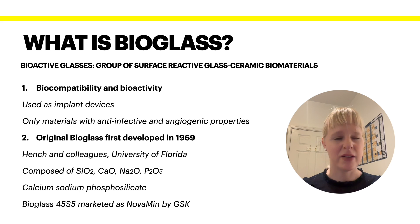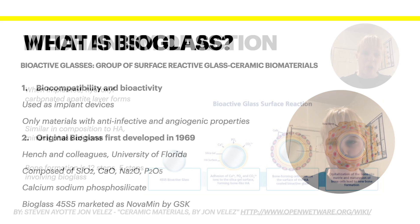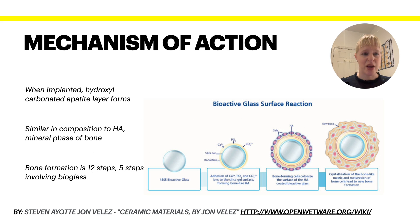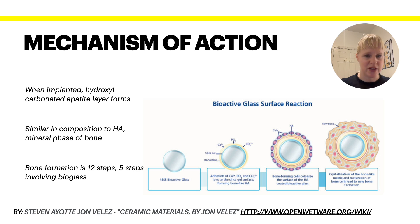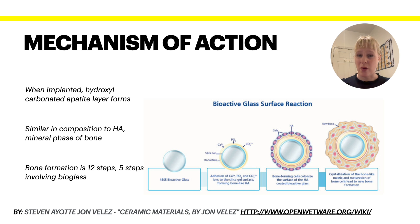What is the mechanism behind this action and how do these bioglasses actually work? Once the bioactive glass is implanted, a hydroxycarbonated apatite (HCA) layer forms around it. You get adhesion of calcium and phosphate ions to the silica gel surface, forming a layer very similar in composition to hydroxyapatite — the mineral phase of bone. Bone-forming cells then colonize the surface of this hydroxyapatite.